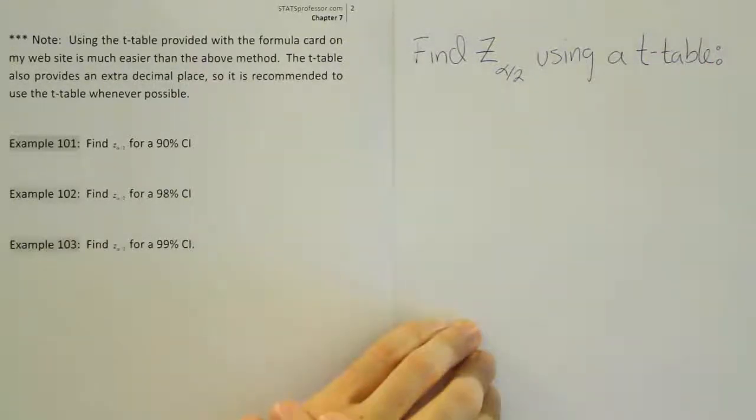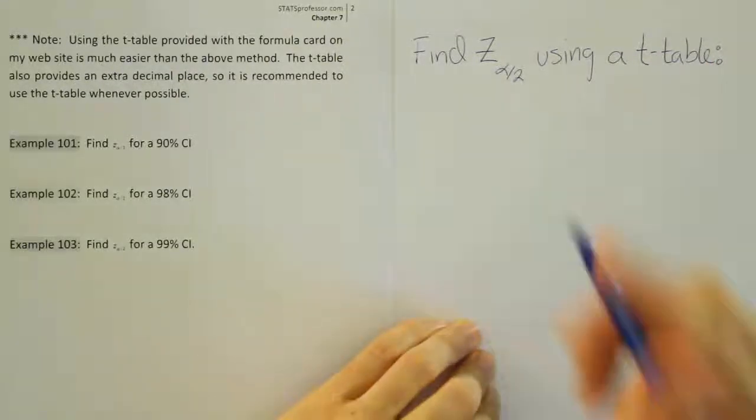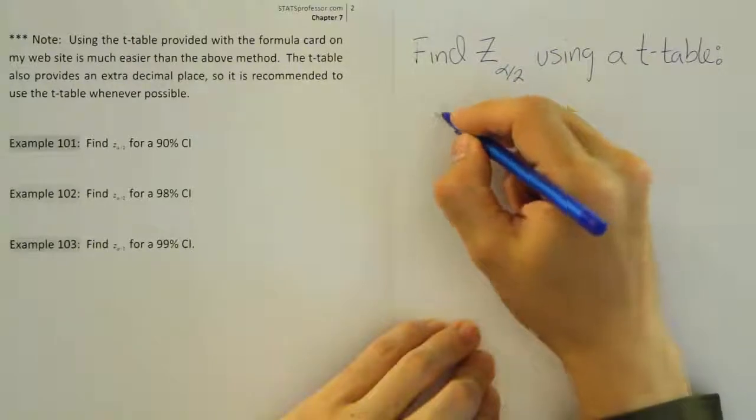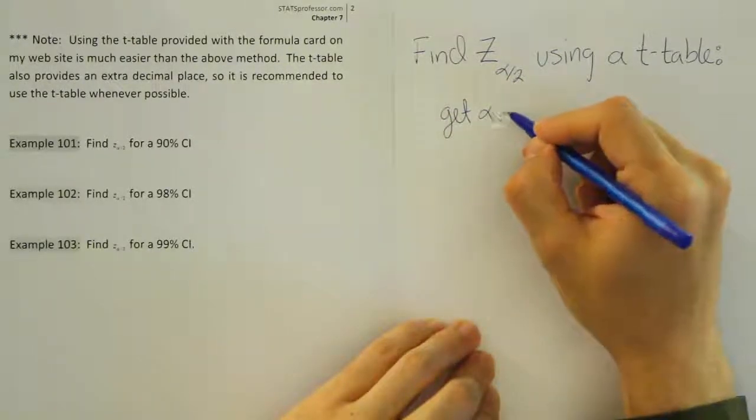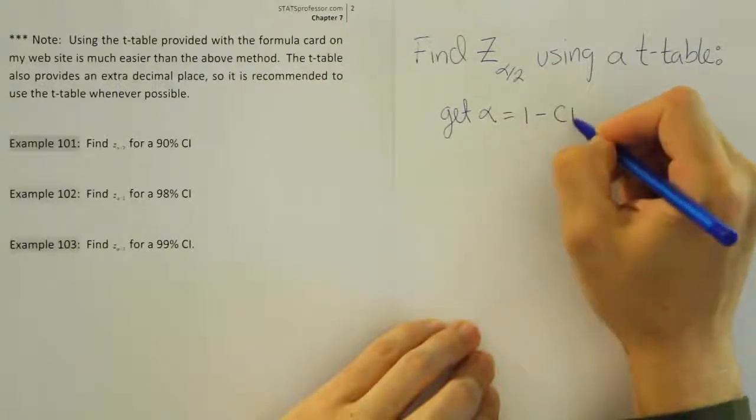So find z alpha divided by 2 using a t-table. So the first step is very simple. Get alpha. So alpha is very easy. Alpha is 1 minus the confidence level.